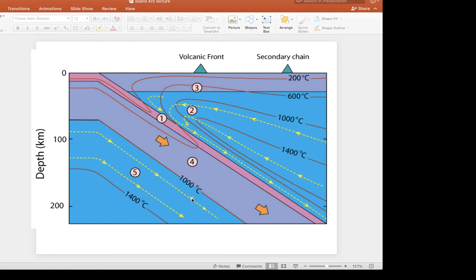So now these isotherms here, the 600, the 1,000, or the 1,400, they all occur much deeper than what they normally would be.